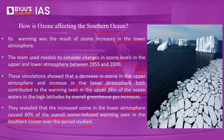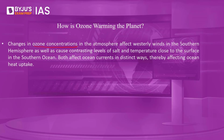How can this contribute to global warming? Changes in ozone concentrations in the atmosphere affect the westerly winds in the Southern Hemisphere. They also cause contrasting levels of salt and temperature towards the surface in the Southern Ocean. Both of these affect ocean currents in distinct ways, thereby affecting the ability of the ocean to take up heat. In other words, as these ozone concentrations warm up the oceans around Antarctica, they damage the cooling mechanism of the Earth.